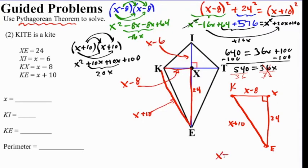So we're left with x equals 540 divided by 36, and that gives us 15. So we have x equals 15. So we can go back to our triangle and say, well, if x is 15, that means that KX is 15 minus 8. So I can say that this is now 7. And KE is 15 plus 10. I can say this is 25. So now I know that KE is 25, which means that TE is 25.